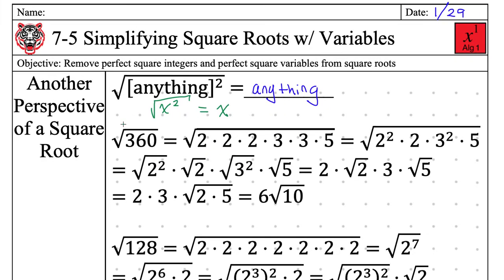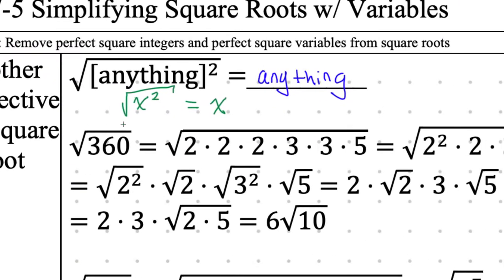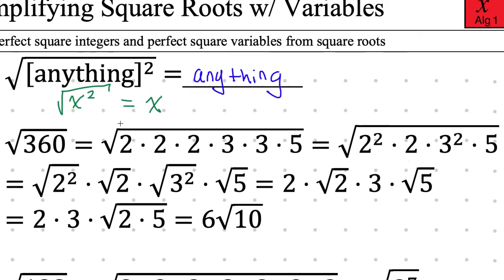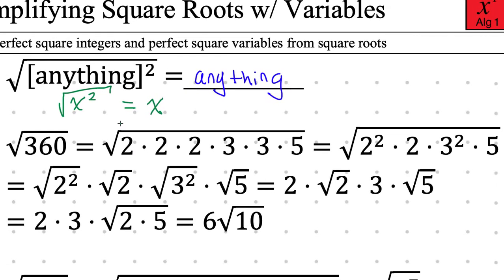I want you to really pay attention to this logic. So first of all, 360. If I made a factor tree for 360, these would be the ends of the branches: 2, 2, 2, 3, 3, 5. You can make a factor tree on the left-hand side and come to the same conclusion. So we have three 2s, two 3s, and one 5.